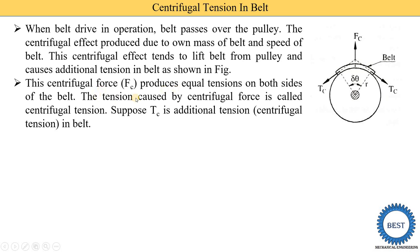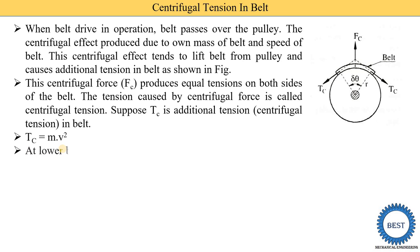The tension caused by centrifugal force is called centrifugal tension. Suppose Tc is the additional tension, meaning centrifugal tension in a belt. The equation for centrifugal tension is mass multiplied by velocity squared. From this equation, if the mass of the belt is increased then centrifugal tension increases. If the velocity is increased, the centrifugal tension also increases.